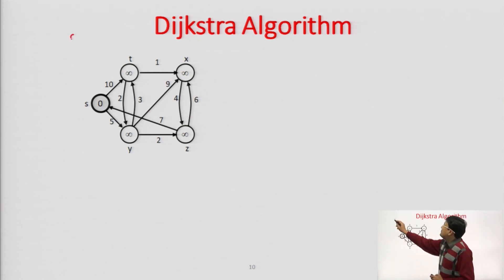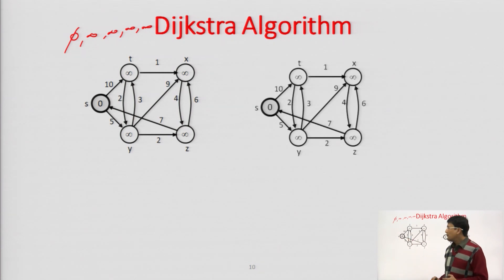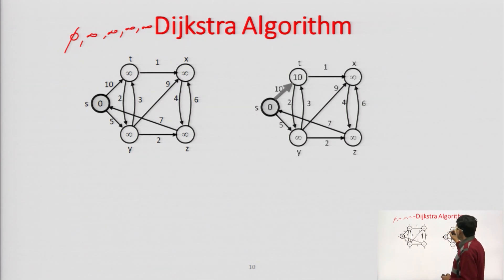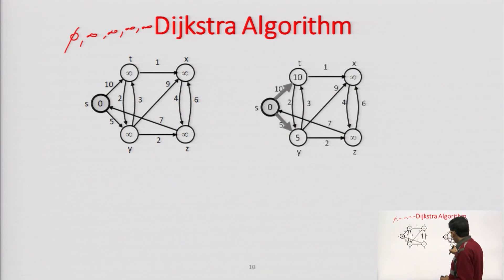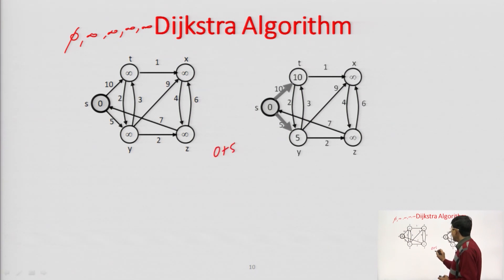Out of all distances — 0, infinite, infinite, infinite, infinite — 0 is minimum. So we pick source S. From source S, there are 2 possible paths. One is S to T — earlier the distance of T was infinite, but since there is an edge from S to T with distance 10, we get 0 plus 10 = 10, which is less than infinite, so we set distance of T as 10. From S we can also go to Y — there is an edge with cost 5. So 0 plus 5 = 5, making the distance of Y from source equal to 5.